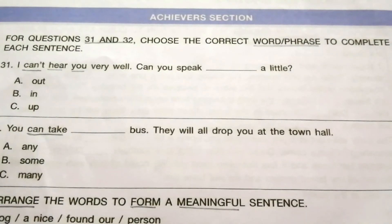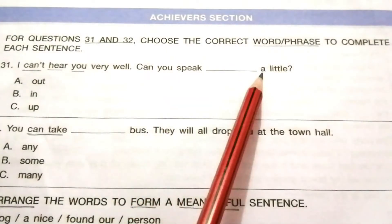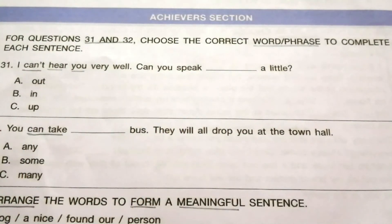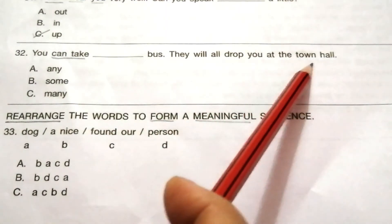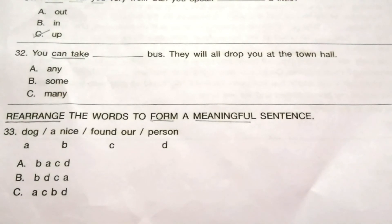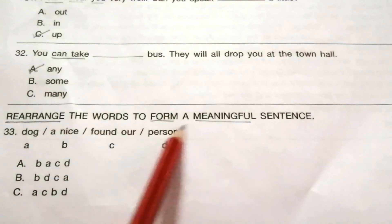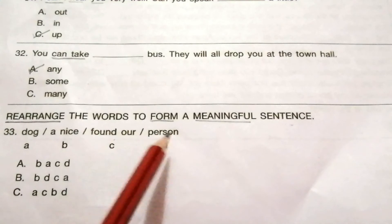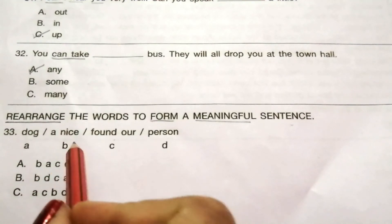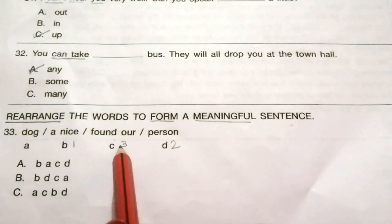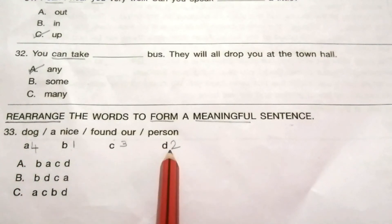Next topic is the Achievers section. For questions 31 and 32, choose the correct word or phrase to complete each sentence. Question 31: I can't hear you very well. Can you speak ___ a little? Options: A) out, B) in, C) up. The answer is C — up. I can't hear you very well. Can you speak up a little? Question 32 answer: The answer is A — any. You can't take any bus; they will all drop you at the town hall. Question 33 — rearrange the words to form a meaningful sentence: 'dog, a nice, found our person.' The answer is B — a nice person found our dog.